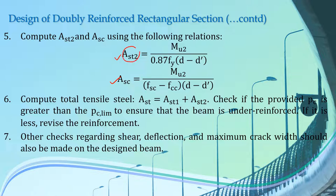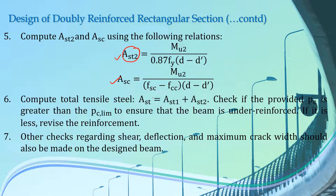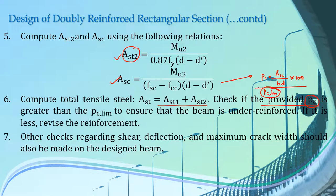After calculating AST2 from step 5 and AST1 from step 3, calculate the total tensile steel as AST1 plus AST2. Finally, check the provided PC: PC is calculated as ASC over BD times 100, which is the percentage of compression reinforcement. Also calculate the value of PC limiting using the formula discussed earlier. Check if the provided PC is greater than PC limiting to ensure the beam is under reinforced. If PC is less than PC limiting, then the beam becomes over reinforced and the reinforcement must be revised. Once this is done, perform other checks regarding shear, deflection, and maximum crack width.